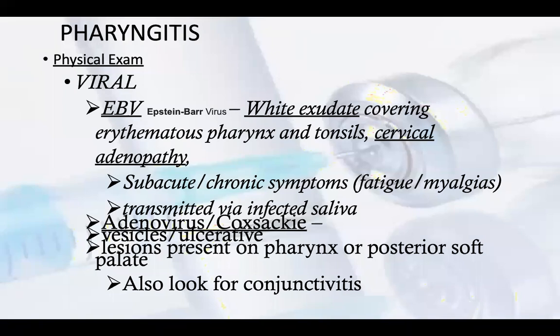Vesicles and ulcerative lesions may be present on the pharynx or posterior soft palate. One should also look for conjunctivitis, as swelling of the eyes can occur when there is pharyngitis.